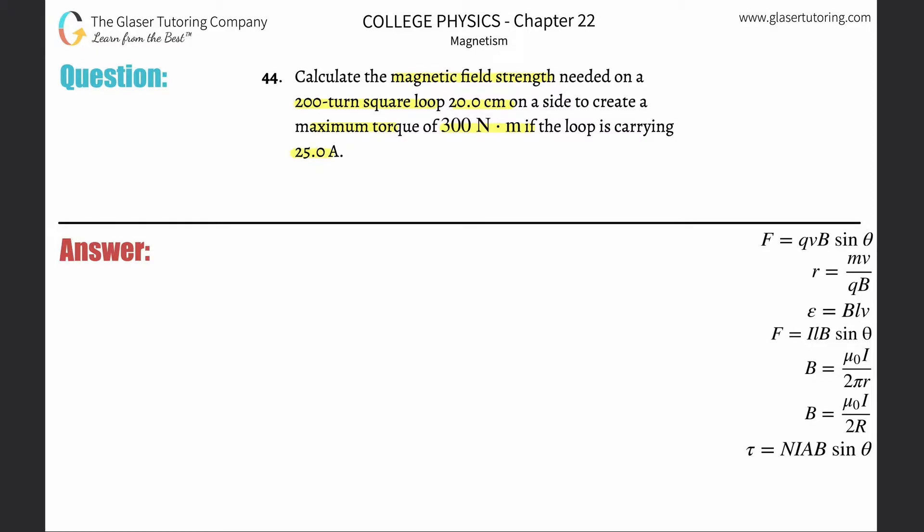So in order to calculate the magnetic field strength, we're talking about a loop, we're talking about torque, we're talking about current. You have to use this formula.